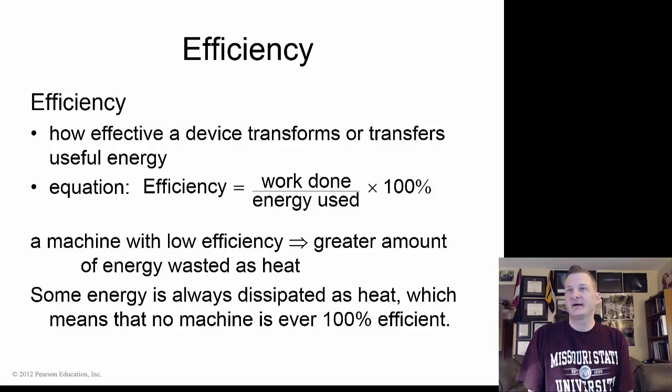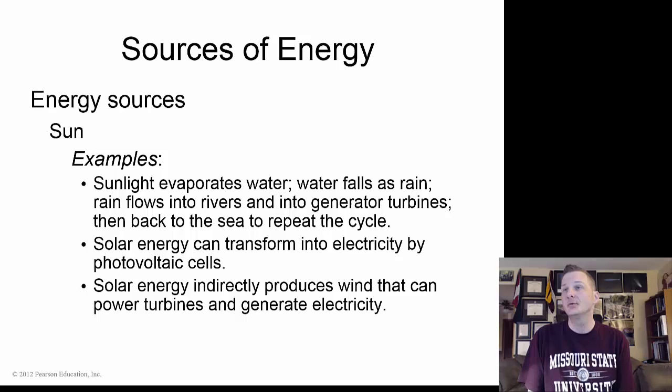Efficiency is how effective a device transforms or transfers useful energy. Efficiency is basically the work done divided by the energy used times 100%. Some energy is always dissipated as heat, so that means no machine is ever 100% efficient, making the perpetual engine not logical to do.